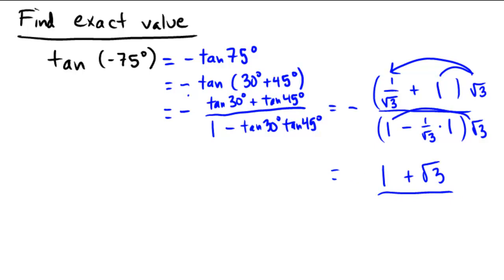So I have a negative 1 plus radical 3 over 1. What do we get down here? We get radical 3 minus 1, and then I can put a negative sign out in front.